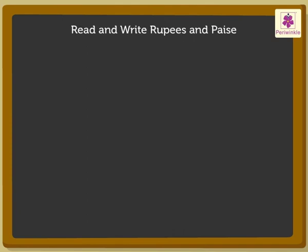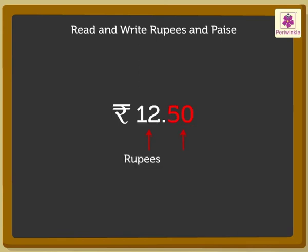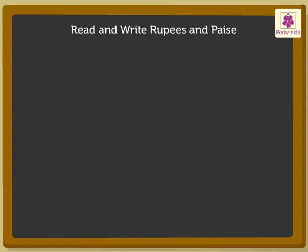Now, let me explain how to read and write an amount. The dot is used to separate the rupees from the paise. The rupees are written to the left of the dot, and the paise are written to the right of the dot. So, 12 indicates the rupees and 50 indicates the paise. Remember, 2 places are used when writing the paise after the dot. We read this amount as 12 rupees 50 paise. Now, let's write the amount 30 rupees 5 paise in figures.